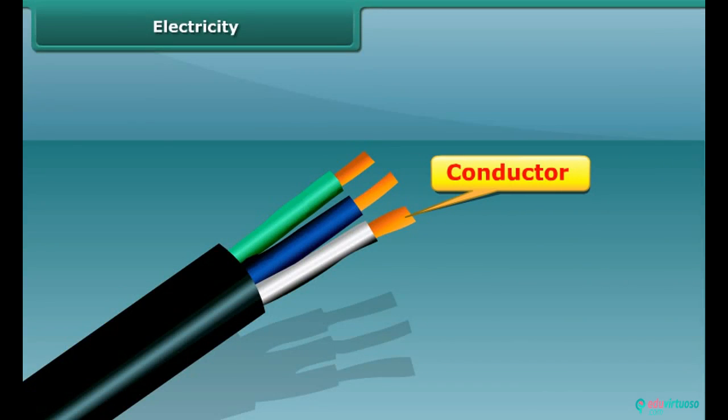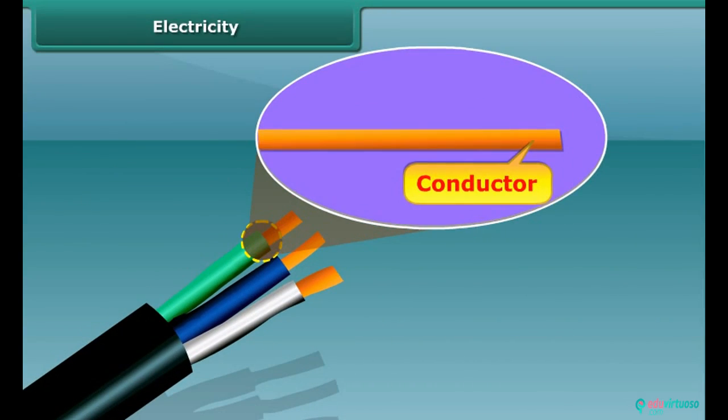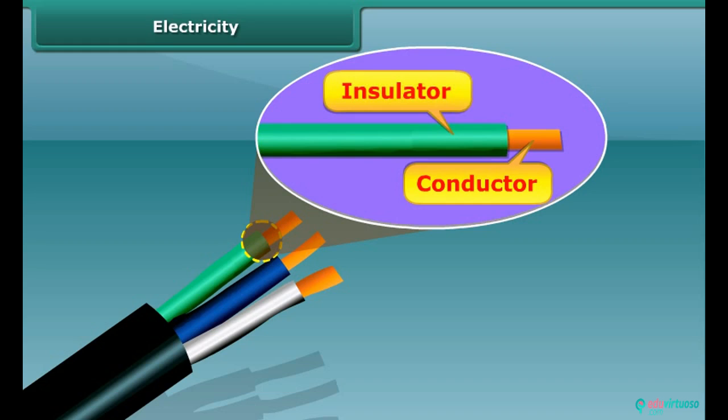Both conductors and insulators are important while using electricity. The conductors like copper or other metallic wires are used for electric supply, but at the same time, these metallic wires are coated by insulating materials like plastic or rubber for safety.